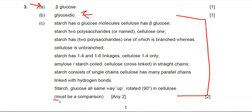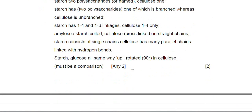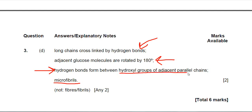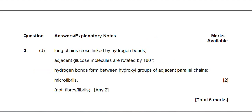On to part D in the mark scheme: we mentioned long straight chains and hydrogen bonds, and glucose molecules being rotated by 180 degrees. We could have also put in microfibrils, as I mentioned. There was also one other option where you could have stated where the hydrogen bonds formed — they were between the hydroxyl groups of adjacent chains. That ends question three. I hope you found it of benefit.